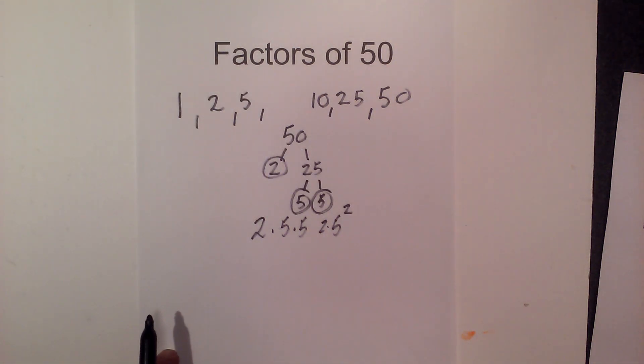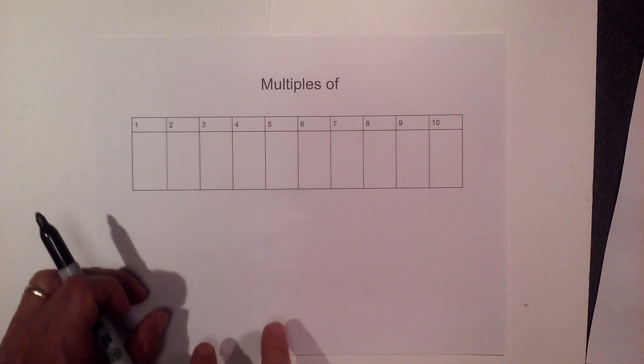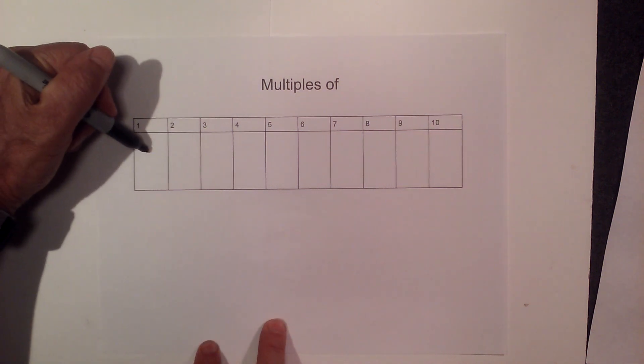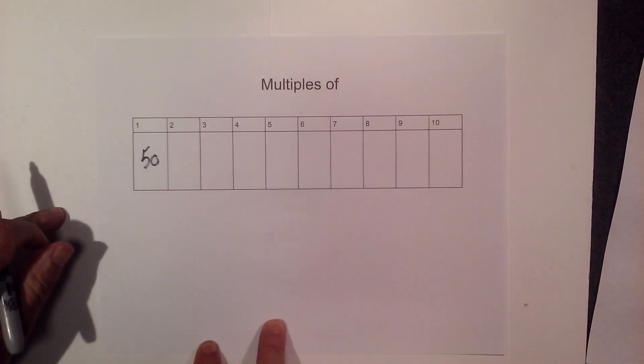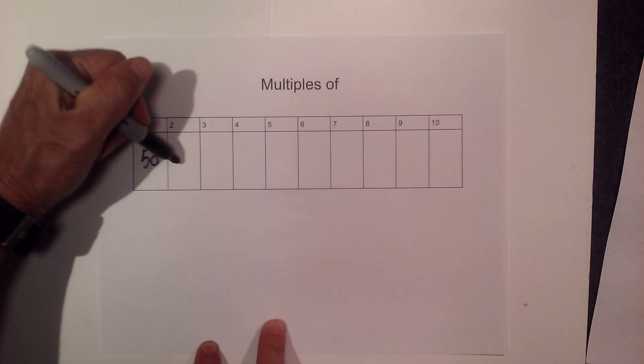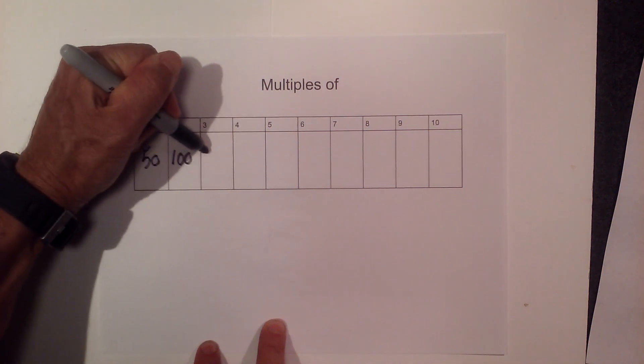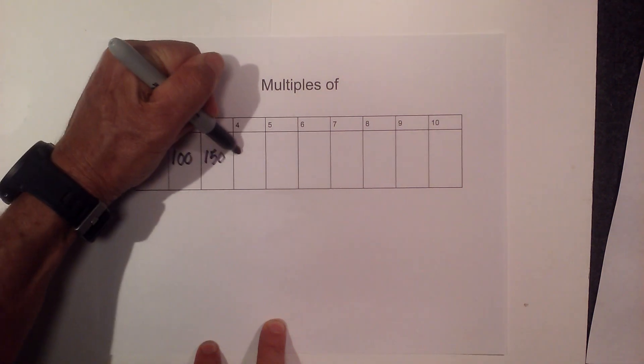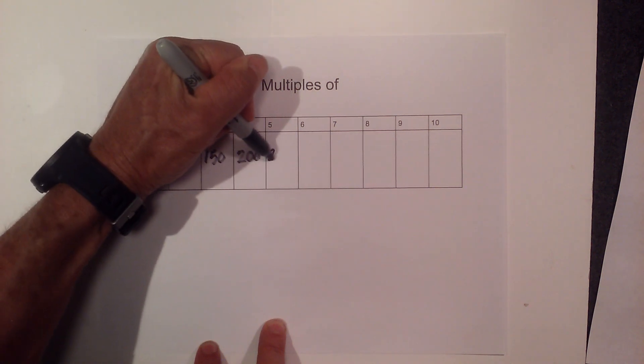Now let's find the multiples of 50. And the multiples of 50 are really pretty easy because it ends in 0. So we have 50, 100, 150, 200. You can see the pattern by now.